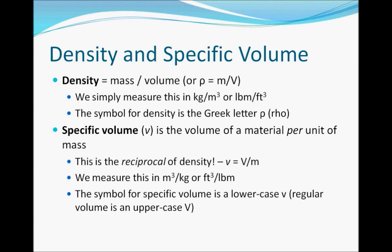Specific volume is essentially density turned upside down: specific volume is volume over mass, while density is mass over volume. The symbol for specific volume is a lowercase v, usually written in italics or cursive to separate it from total volume, which uses uppercase V. Specific volume is measured in cubic meters per kilogram in SI, or cubic feet per pound mass in Imperial — which are the same units as density but flipped upside down.